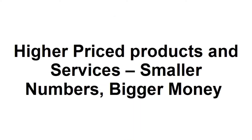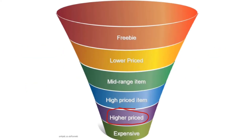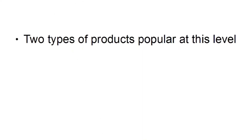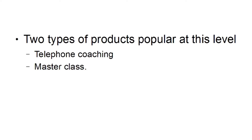When you reach the point on your sales funnel where you're selling your higher-priced products and services, you're going to be selling smaller numbers but making bigger money. This level comes pretty much at the penultimate level of your sales funnel. People have downloaded your freebie, bought your lower-priced, mid-priced, and high-priced items. And now you're going to offer them something quite expensive but of very high quality.